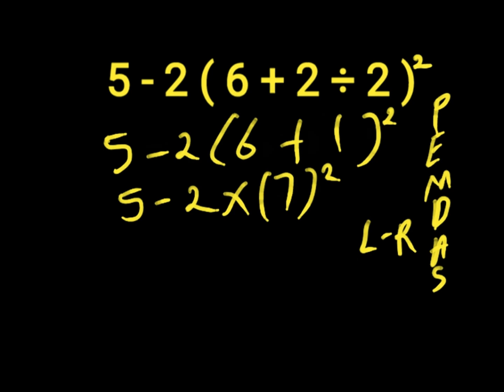So, 7 raised to the power of 2 is 7 times 7. 7 times 7 will give us 49. Then we have 5 minus 2 times 49.